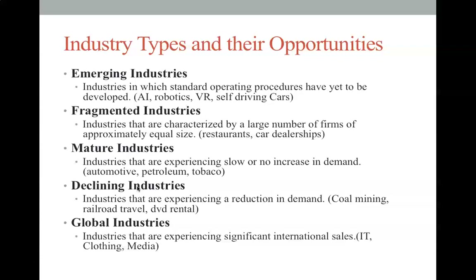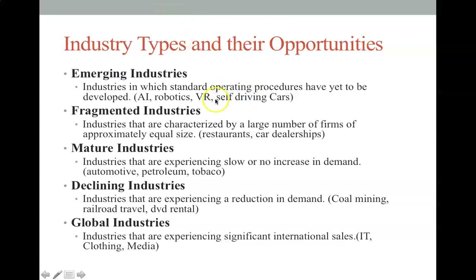Let's look at a couple of industry types. The first is an emerging industry — industries in which standard operating procedures have yet to be developed. They're pretty new, being disrupted and changing every day, with no clear leaders yet. Examples include AI and robotics and virtual reality. There's no company we associate head and shoulders above others with virtual reality yet — no 'Nike of VR' — though Tesla is perhaps doing a lot in self-driving cars.